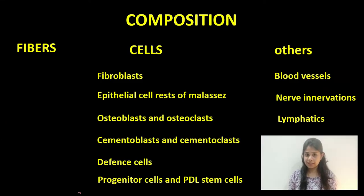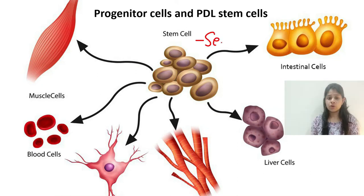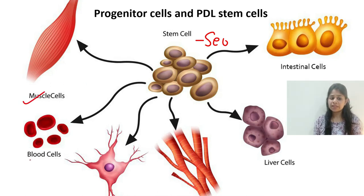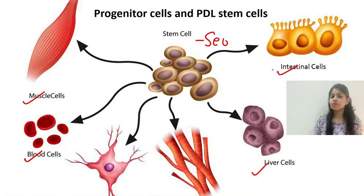The last type of cells in the periodontal ligament are the progenitor cells, or periodontal stem cells. There is a lot of research being conducted in this field. Co et al. isolated the periodontal stem cell and found that these stem cells had high clonogenicity — meaning they could differentiate into various cell lineages, including muscle cells, blood cells, liver cells, and intestinal cells. These stem cells have high regenerative potential.